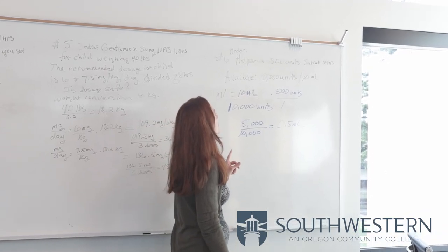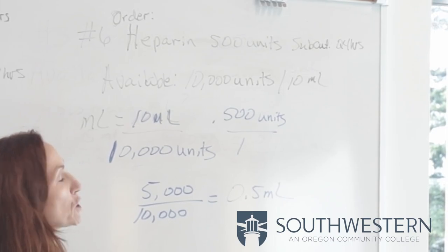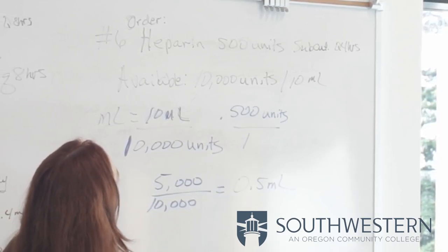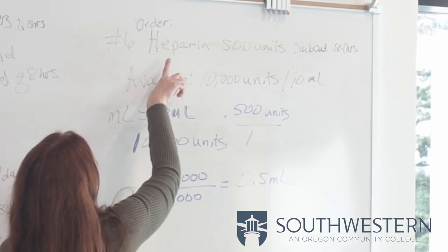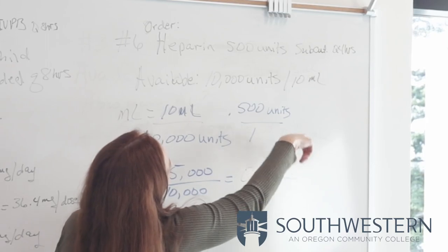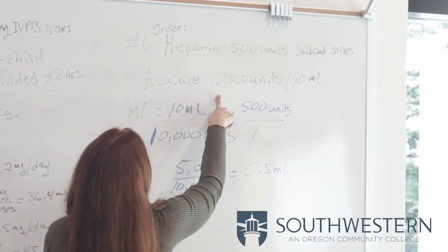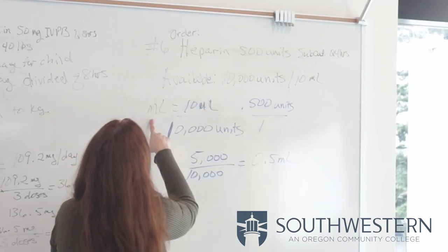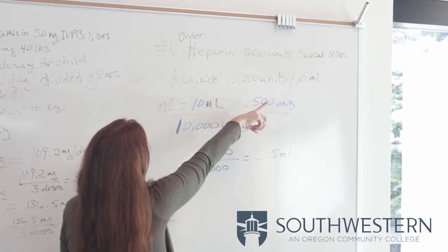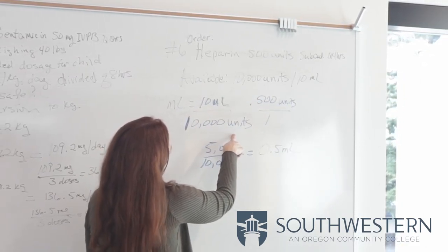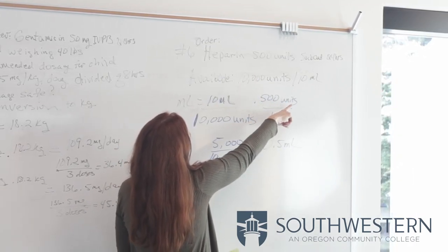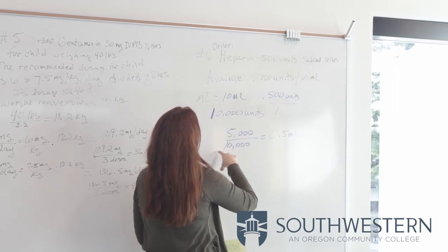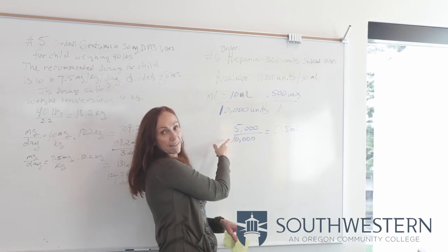The next problem involves heparin, which comes in units. We need to find how many milliliters to give. The order is heparin 500 units subcutaneous every 4 hours. Available is heparin 10,000 units per 10 milliliters. Milliliters equals: 10 milliliters over 10,000 units, multiplied by 500 units over 1 as a placeholder. Multiply across: 5,000 over 10,000.